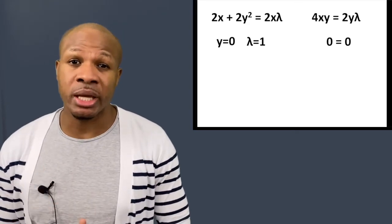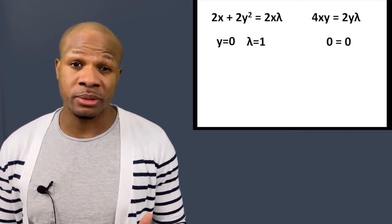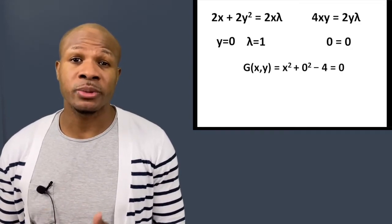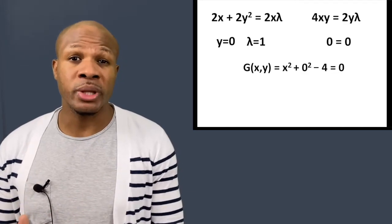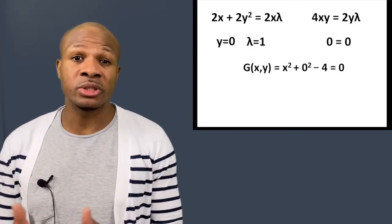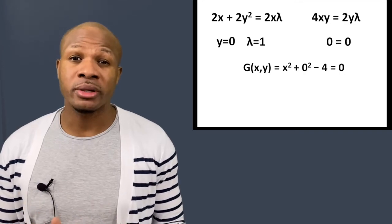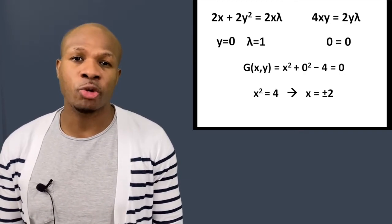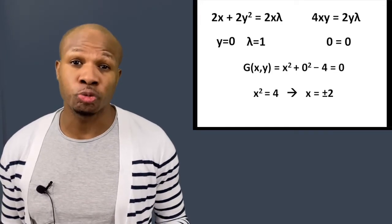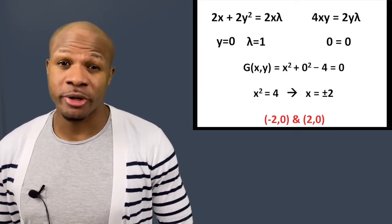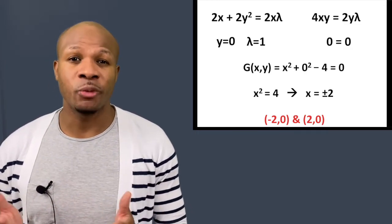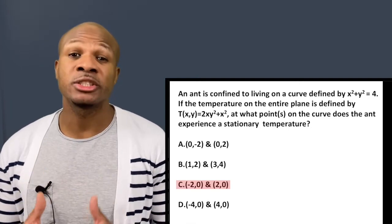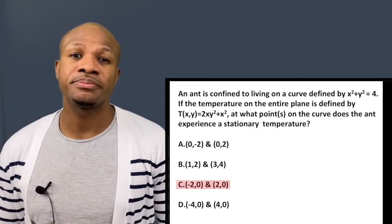We use our constraint equation G: x² + y² − 4 = 0. With y = 0, we get x² − 4 = 0, so x² = 4, giving x = ±2. The stationary points are (2, 0) and (−2, 0). The correct answer is choice C: (−2, 0) and (2, 0).